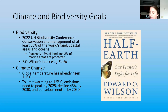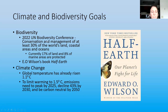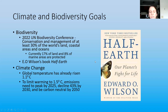Just stepping back to look at the bigger picture — we're in a pretty serious biodiversity and climate change crisis. The UN biodiversity conference recommended that we try to conserve 30% of the world's land, coastal areas, and oceans. Currently only 17% of land and 8% of marine areas are protected. E.O. Wilson suggested setting half the world aside for conservation. We can do our little part in our own yards.